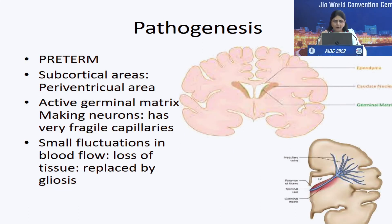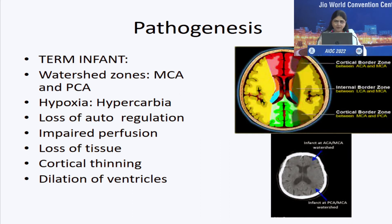Looking at the microprocesses: in a preterm infant, the subcortical areas are most commonly affected. There is an active germinal matrix making new neurons, and this area has very fragile capillaries. Small fluctuations in blood oxygen or blood carbon dioxide levels will affect new glial cell formation, giving rise to tissue loss and/or gliosis. In a term infant, it is usually the watershed zones — commonly between the middle and the posterior cerebral artery — that react to hypoxia with loss of autoregulation, loss of tissue, cortical thinning, and dilation of the ventricles.